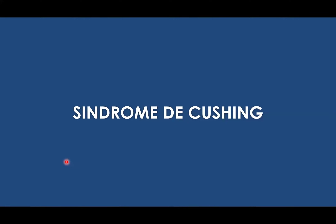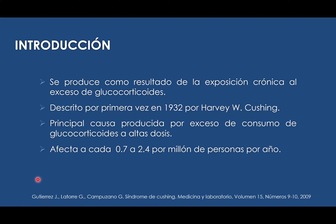Ahora hablamos del síndrome de Cushing, un tema un poco más amplio. El síndrome de Cushing fue descrito por primera vez en el año 1932 por Harvey Cushing, de ahí su nombre. Actualmente se viene produciendo básicamente por el consumo exógeno de glucocorticoides en exceso.